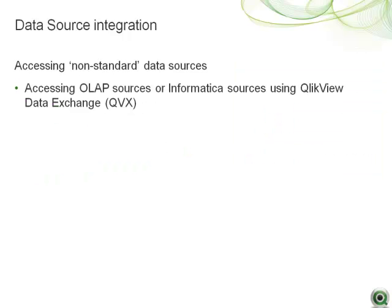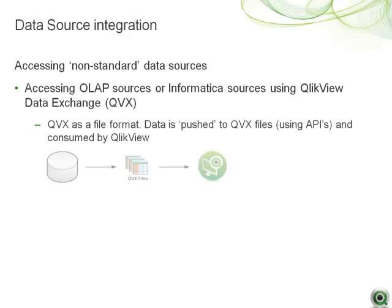It's common for data to be stored in a location that is not reachable via ODBC, such as a web service, or is in a format only accessible by a particular application, such as Informatica or an OLAP source. ClickView offers a way to unlock this trapped data by using ClickView Data Exchange, also known as QVX, and it can be used in two ways. QVX is a file format — a QVX file is similar to an XML file that is optimized for rapid loading of data into ClickView. ClickView consumes QVX files when loading data, essentially using QVX to push data out to ClickView.